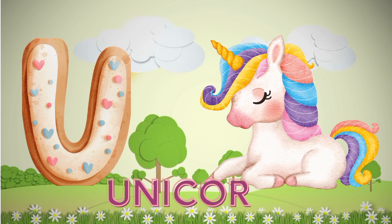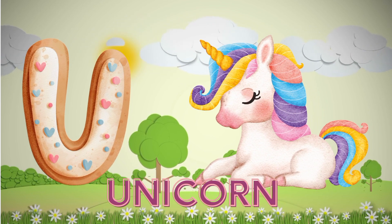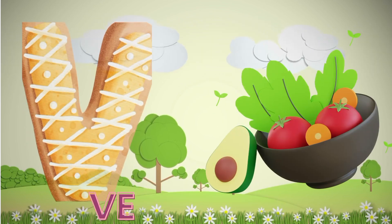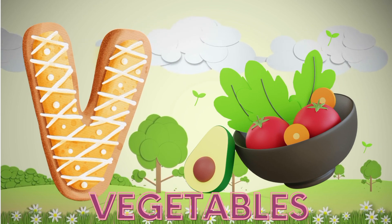U. U is for Unicorn. V. V is for Vegetables.